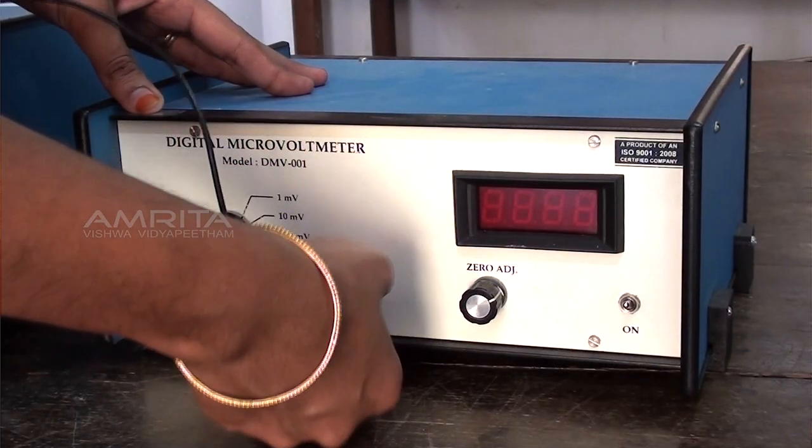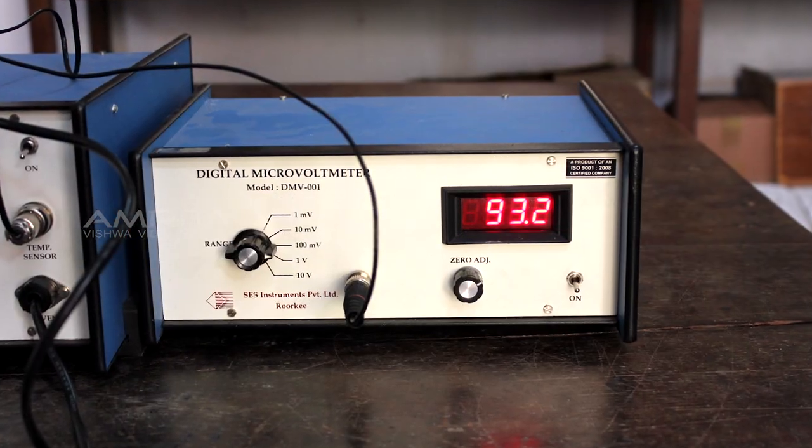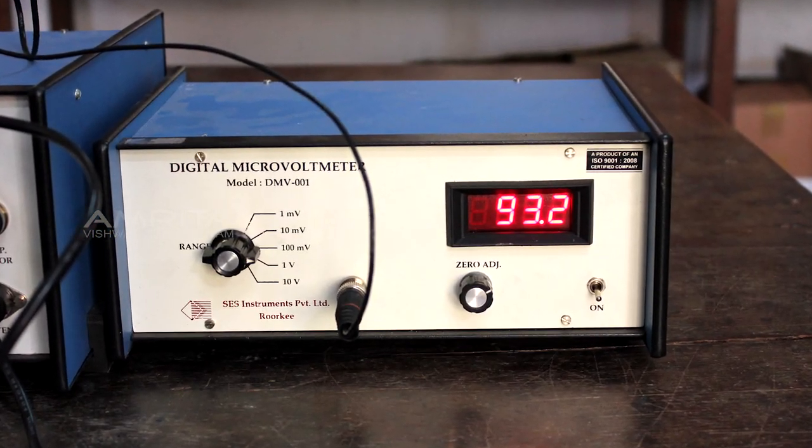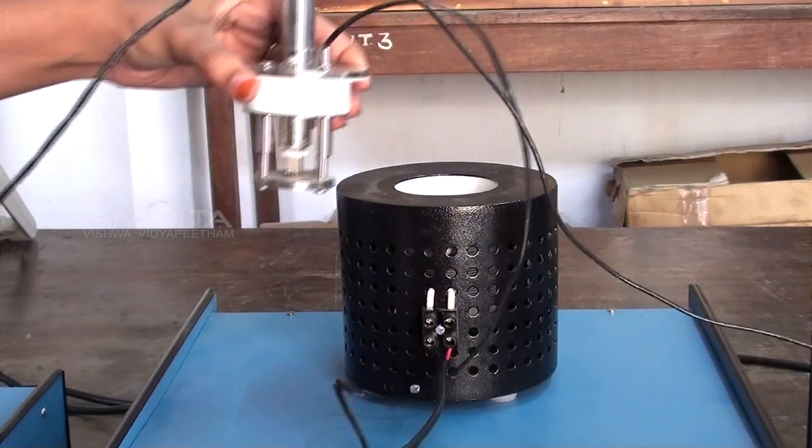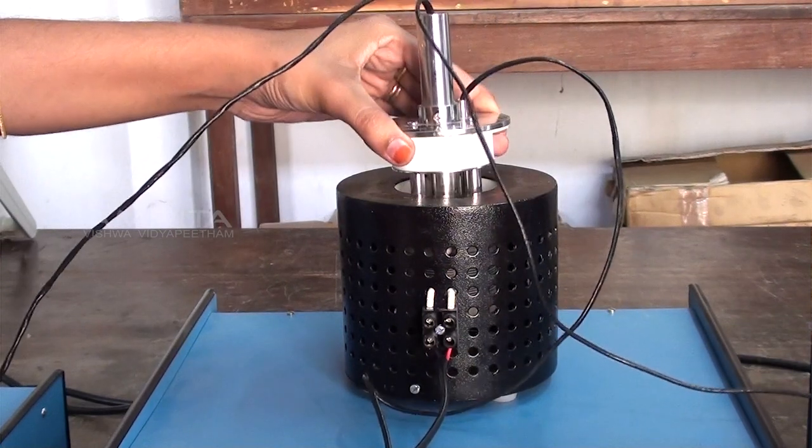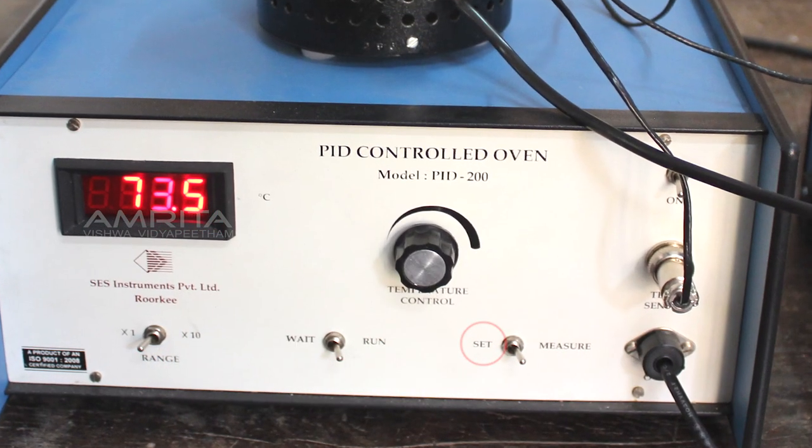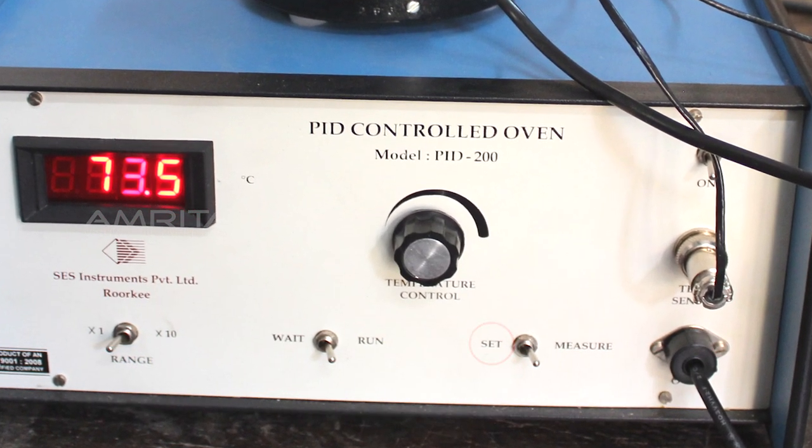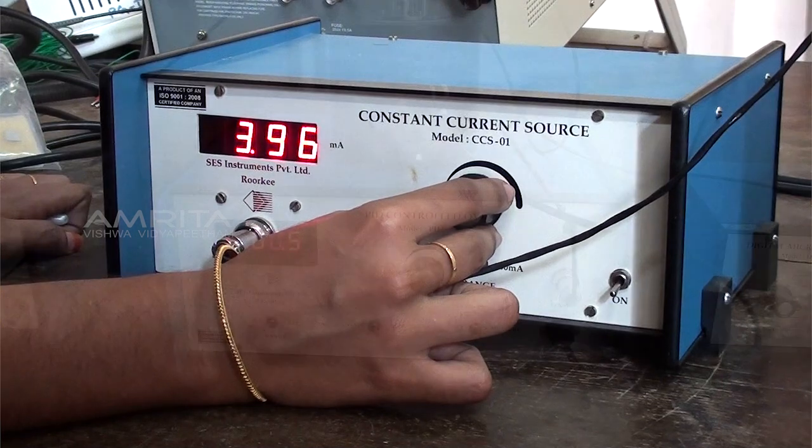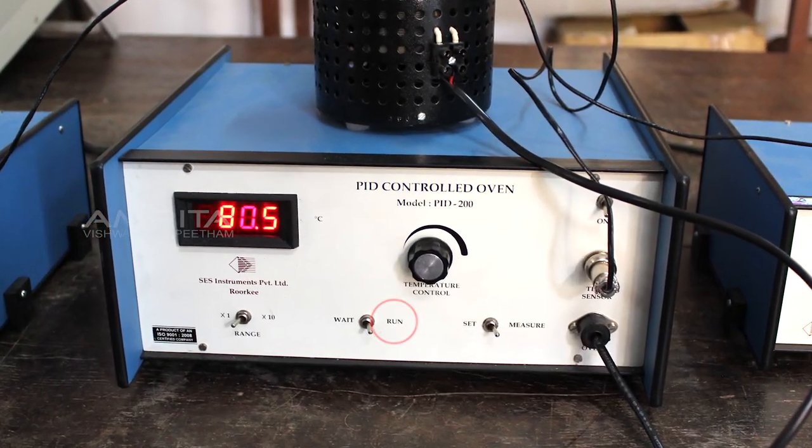The voltage developed across the middle 2 probes is measured using digital voltmeter. Probe arrangement is placed inside the oven which is connected to the heater supply. The set button is used to fix the temperature in the oven. Once the temperature is set, use the run button to start heating the oven.